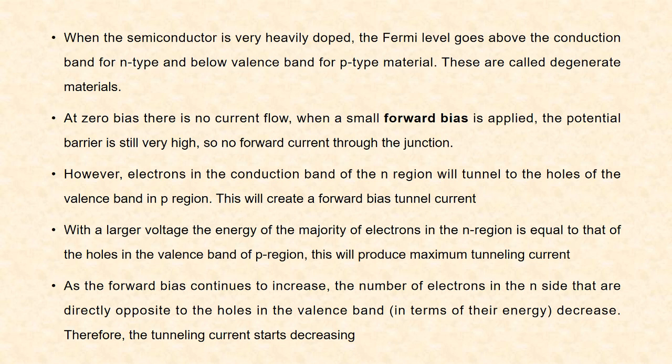With the applied voltage larger, the energy of the majority of electrons in the n region is equal to that of the holes in the valence band of p region, and this will produce maximum tunneling current. As the forward bias voltage is increased further, the number of electrons in the n-type that are directly opposite to the holes in the valence band decrease. Therefore, the tunneling current starts decreasing.